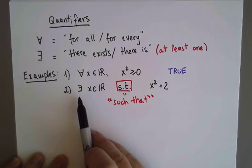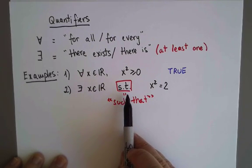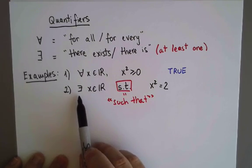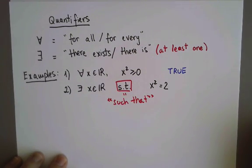Whenever you see an existential quantifier, you should pretend there is a 'such that' after that, even if it's not there explicitly. So there exists a real number x such that x² equals two, and this is true.